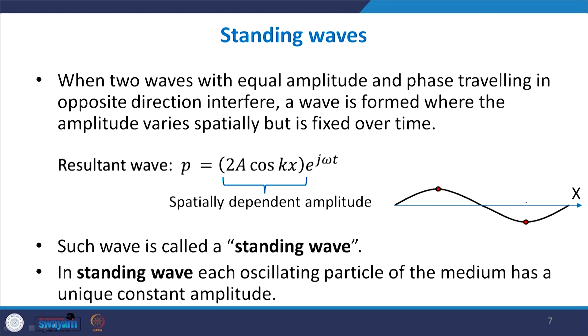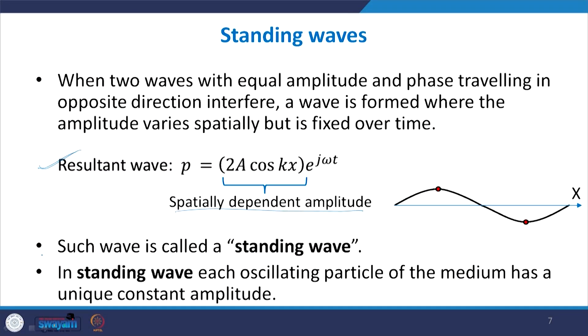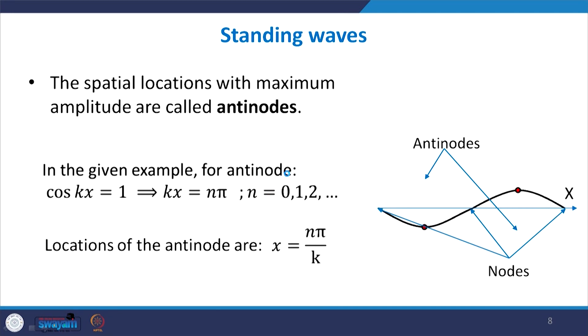This animation shows the resultant wave we have found. The amplitude is spatially dependent — for different x locations the amplitude is different, but it is fixed at each location, and there is a sinusoidal motion with respect to time. Such a wave is called a standing wave, where each oscillating particle has a unique constant amplitude depending upon its spatial location.